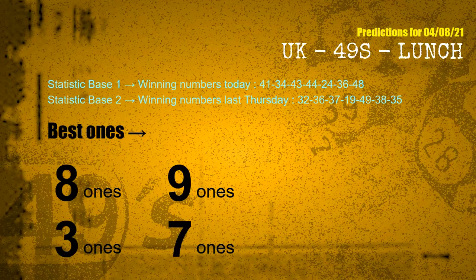According to the statistics above, with today's winning numbers 41, 34, 43, 44, 24, 36, 48, and last Thursday's winning numbers 32, 36, 37, 19, 49, 38, 35 — the frequent following ones are: 8 ones, 9 ones, 3 ones, 3 ones, and 7 ones. Besides following ones, we need more clues for winning numbers of the next draw, so we will find out the most drawn ball color through today's result.